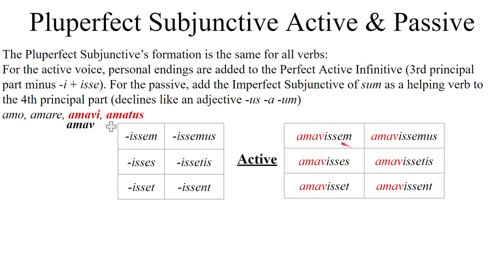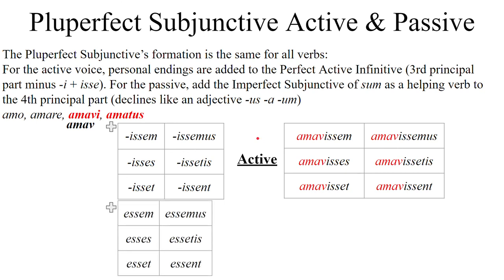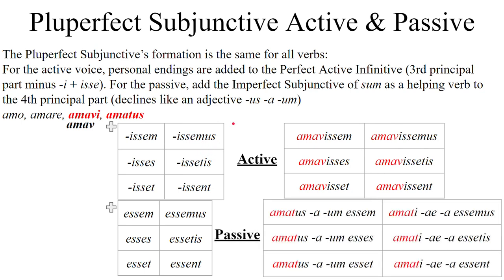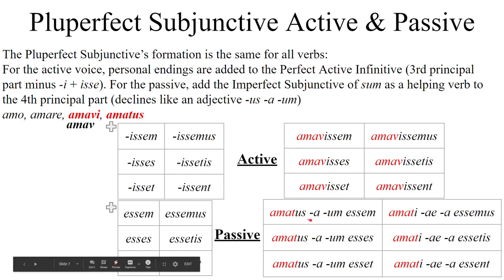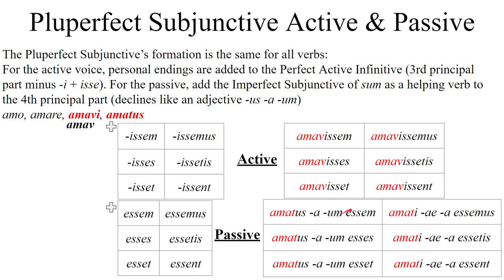For the pluperfect subjunctive passive, it's like the perfect passive, only instead of the present subjunctive of sum, we're going to use the imperfect subjunctive of sum: essem, esses, esset, essemus, essetis, essent. So all in all we have: amatus/a/um essem, amatus/a/um esses, amatus/a/um esset, amati/ae/a essemus, amati/ae/a essetis, amati/ae/a essent. Remember that -us/-a/-um is the singular for masculine, feminine, and neuter; and -i/-ae/-a is the plural masculine, feminine, and neuter.